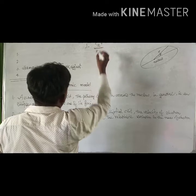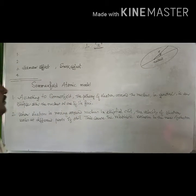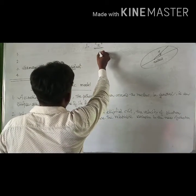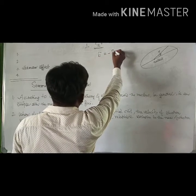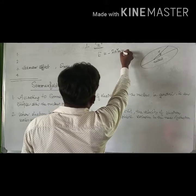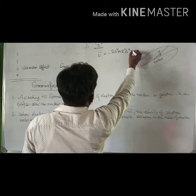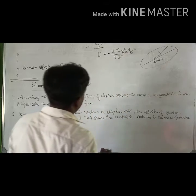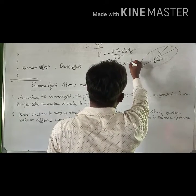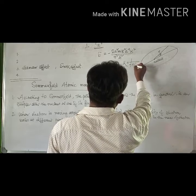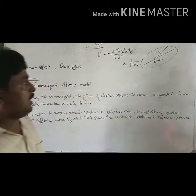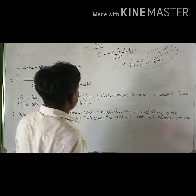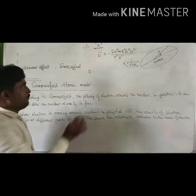One is the principal quantum number, denoted by n. With the help of the principal quantum number, we can determine the energy of an electron in an orbit: E = −2π²mZ²e⁴k² / n²h², where k = 1 / 4πε₀.